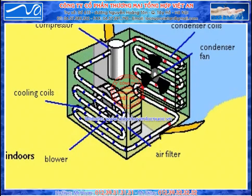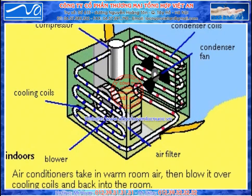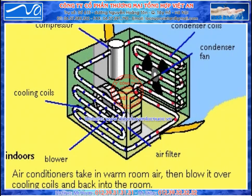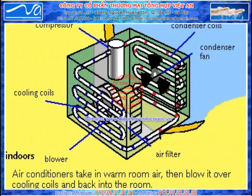Air conditioners are heat exchangers. They take warm air from a room, blow it over cooling coils to remove the heat, and then return it to the room.